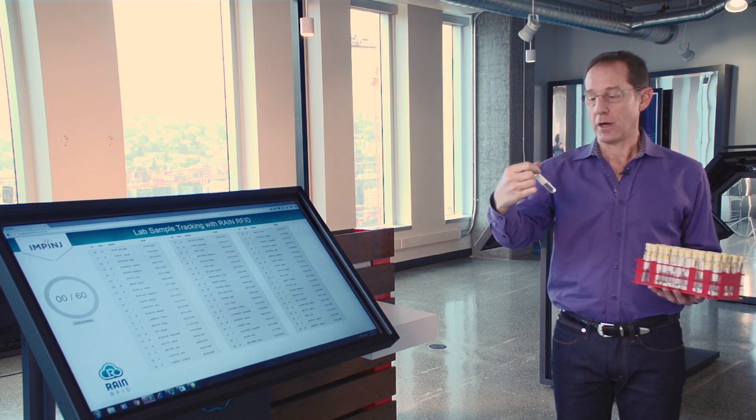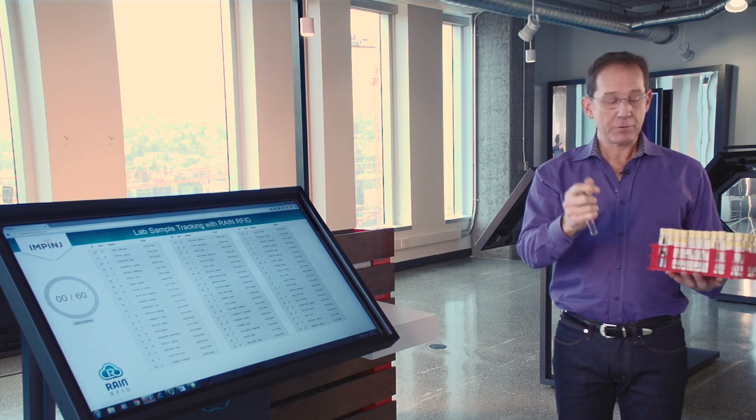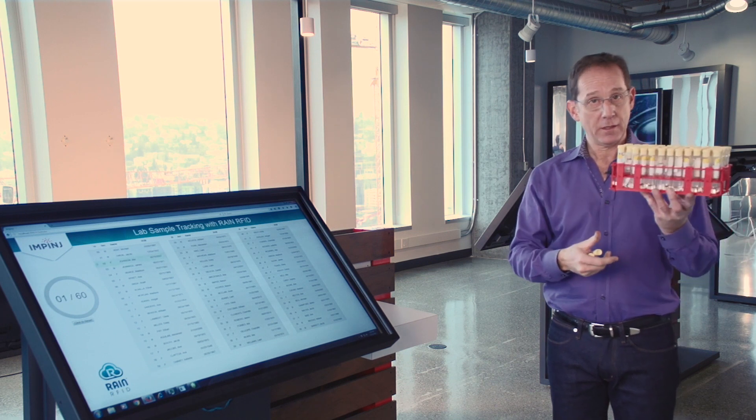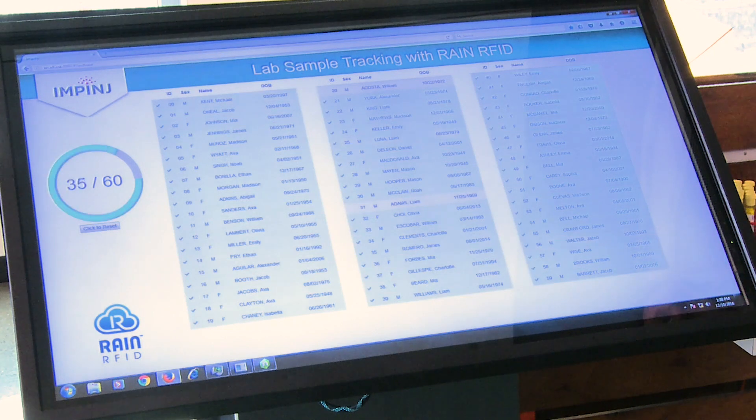Each one of these vials has a number on it. This one's number 20 and this one's number 31. I'm going to show you now what happens when I take this rack of samples and place it on the test table.